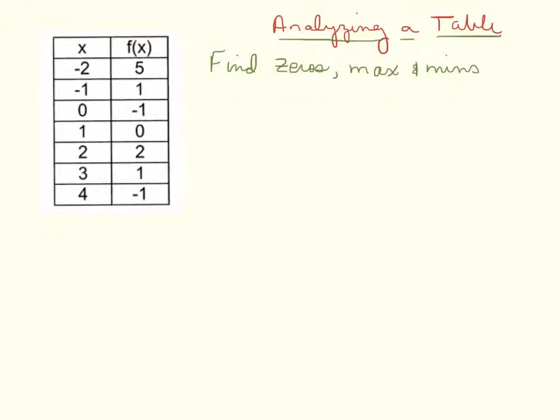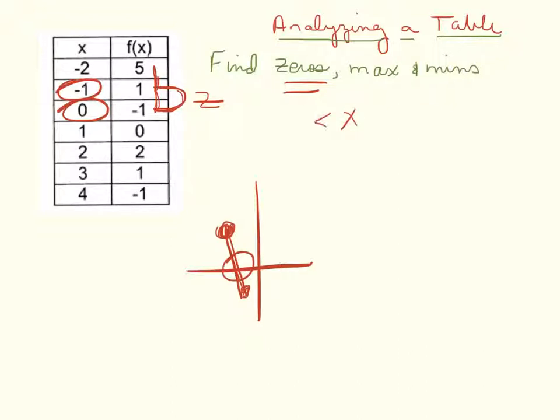For the table, when I'm finding zeros, I look for a change in sign. Here I went from 5, which is positive, to 1, which is positive, to negative 1, which is negative. Right there I went from a positive y value—think about the graph, I'm on a positive y value—and I went to a negative y value. That means my graph had to cross 0 or the x-axis. So there's a zero where that zero occurred between x's negative 1 and 0.